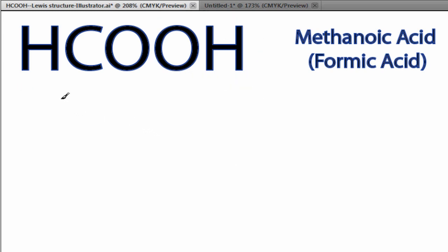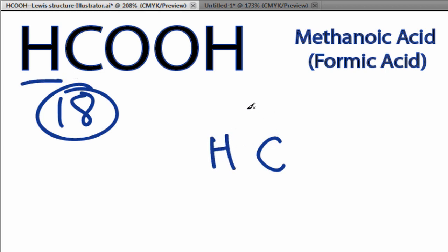So HCOOH in this Lewis structure, we have a total of 18 valence electrons. Let's put the carbon at the center, and we have this H here. Let's put it out here, and then we have two Oxygens, so let's put an O and an H over here, and then I'll put the other Oxygen right there.